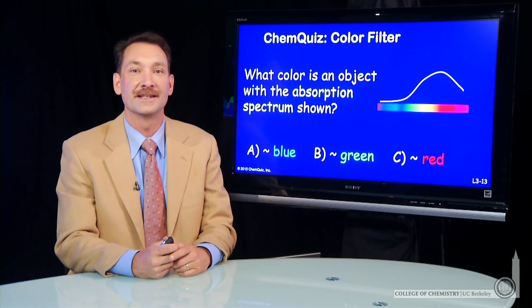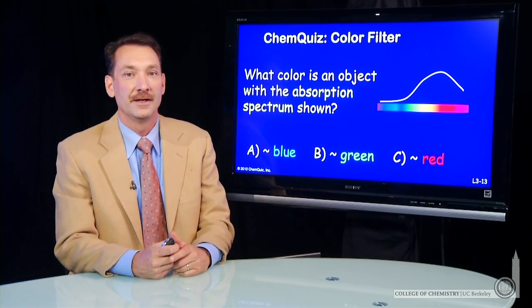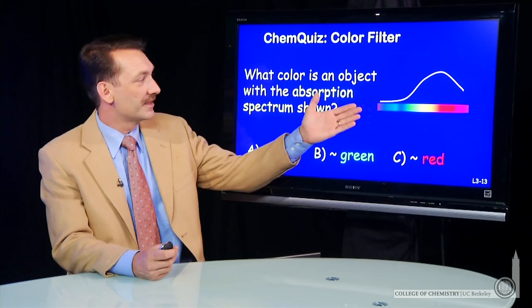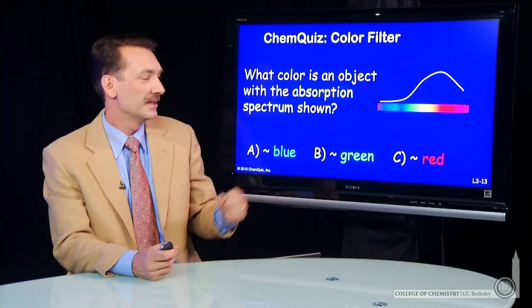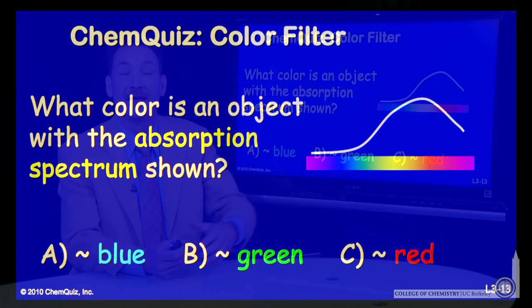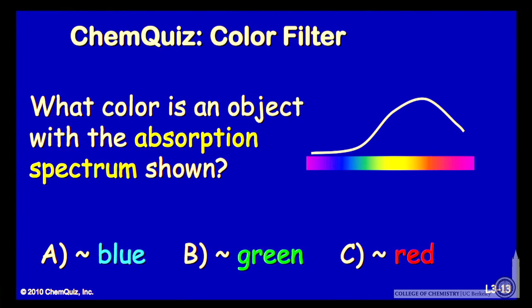So let's talk about absorption of light in terms of a chem quiz. If you have an object that has an absorption spectrum that looks like this, what color is that object? Is it blue, green, or red? Think about that for a minute and make a selection.